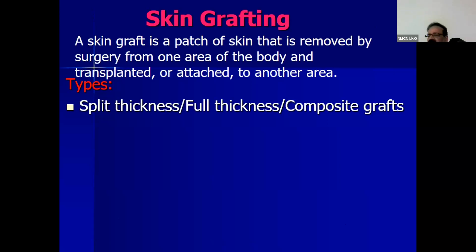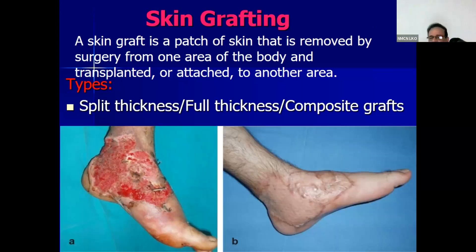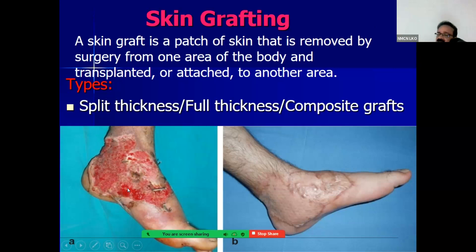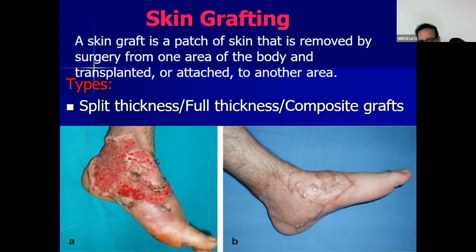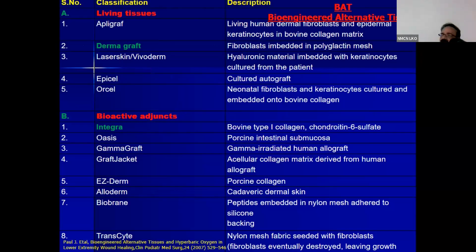Sometimes the wound heals but the overlying skin — the epidermis and dermis — has not regenerated, so you need to put a layer over it, requiring skin grafting. The wound has healed with good granulation tissue but if it is very large it will take more time, and the longer it remains open the more chances of reinfection. A skin graft is taken from another part of the body and applied. The graft can be split-thickness, full-thickness, or composite graft. Sometimes the patient is not willing for this surgery, or the wound is too big and there is not enough donor skin available.